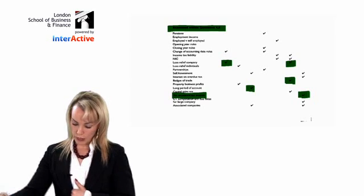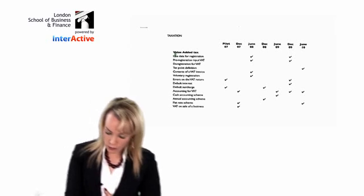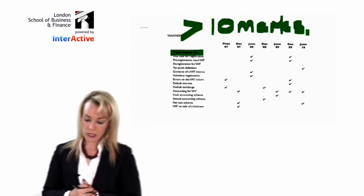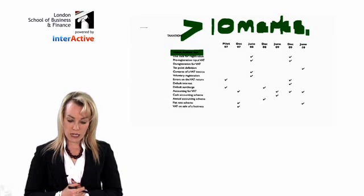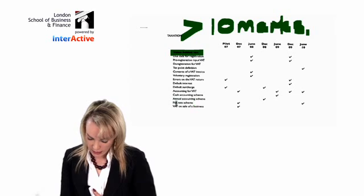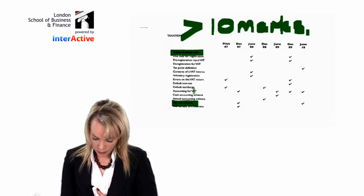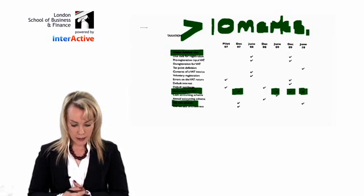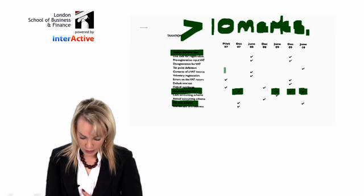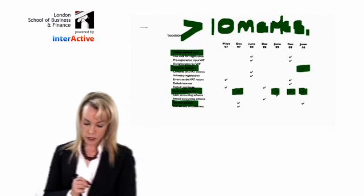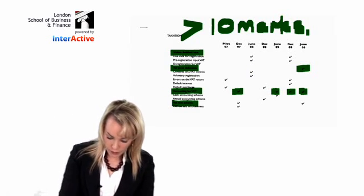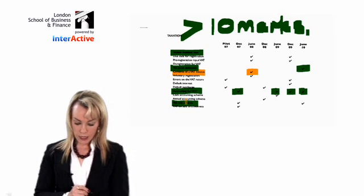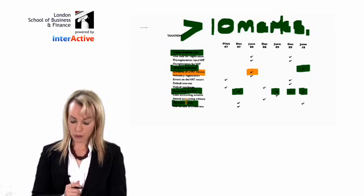The final topic to cover is VAT, which is worth at least 10 marks, and it has appeared in every single exam. In the last exam, we had the flat rate scheme, accounting for VAT, VAT registration, and the tax point. Contents of a VAT invoice haven't come up for a while and are probably due to appear. The cash accounting scheme and annual accounting scheme are also possibly due to come up soon.